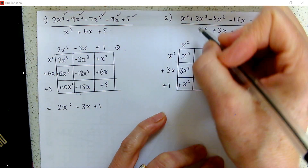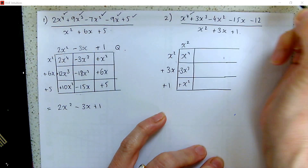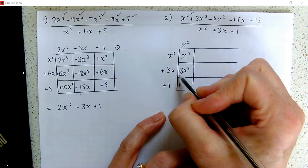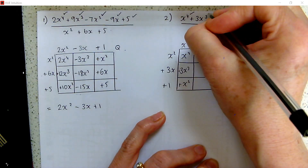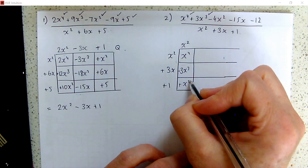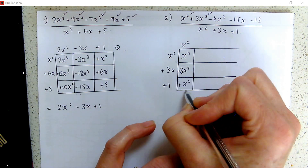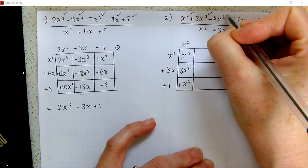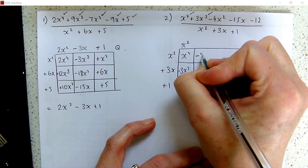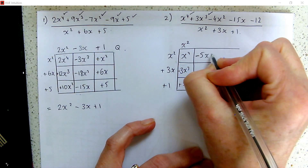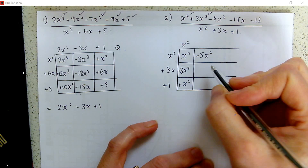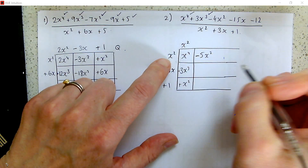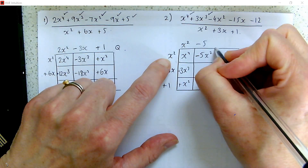So we've dealt with our x to the power of 4. We need a 3x cubed, and in fact we've already got a 3x cubed — so that's dealt with. We have so far got 1x squared, but we need minus 4x squared, so we need to take away minus 5x squared. We think: what do we multiply x squared by to make minus 5x squared? Minus 5.